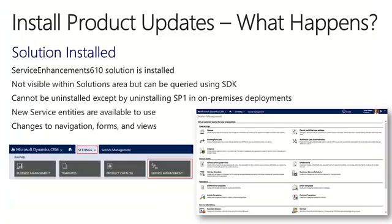Behind the scenes, when you install the product updates, a solution called Service Enhancements 610 is installed. This is a special solution that will not appear within the Solutions area, although you can query for it using the SDK. This may be helpful if you're an ISV and want to handle something differently depending on whether an organization has the new features installed. This solution cannot be uninstalled except in an on-premises organization by uninstalling the entire Service Pack.